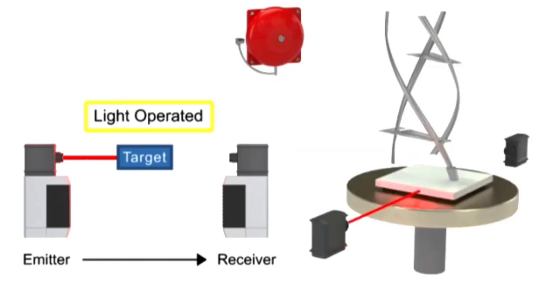Conversely, in this light-operated mode example, the absence of light being received by the receiver is normal. When the object is removed from the table, the switch is triggered and the alarm will sound.